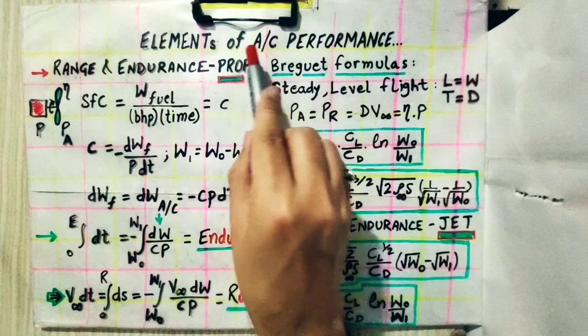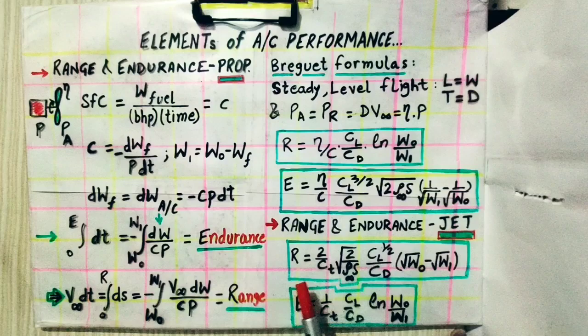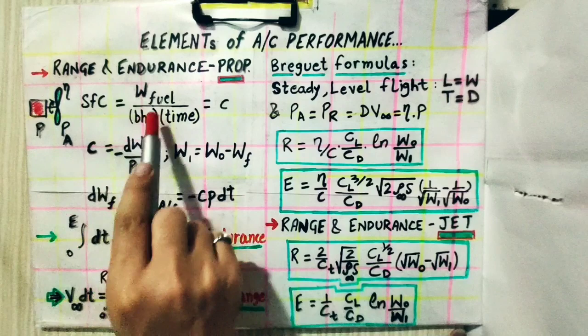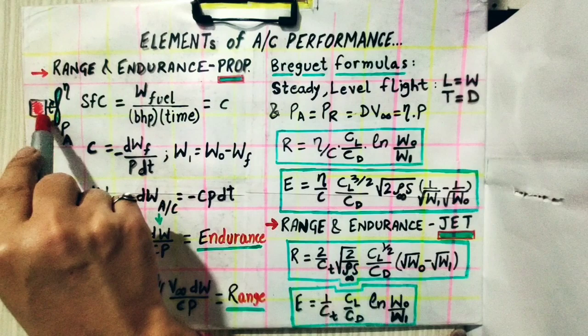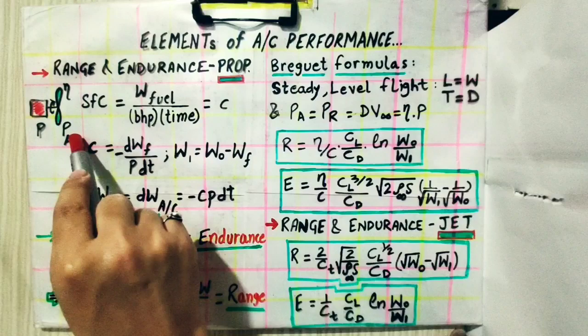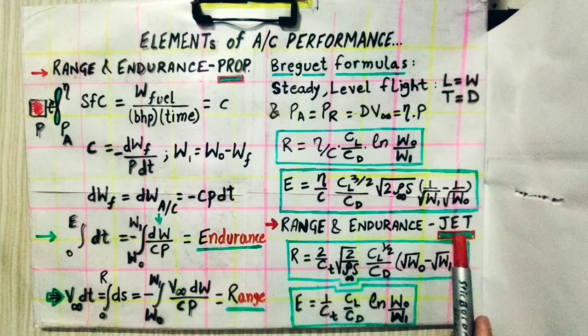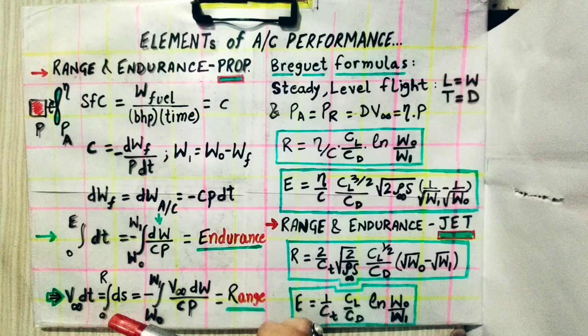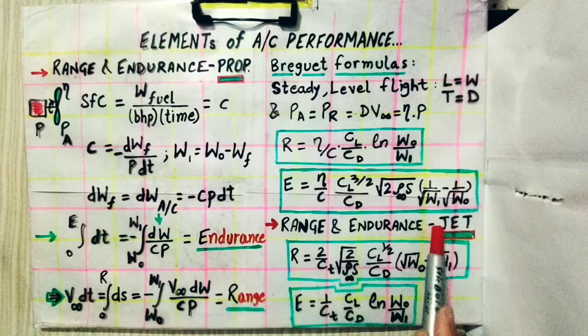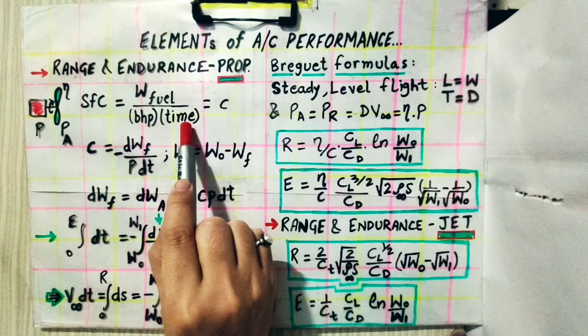Now moving on to range and endurance for a jet engine airplane. The specific fuel consumption differs here: in a piston engine, fuel is consumed to generate power to rotate the shaft and drive the propeller; in a jet engine, the fuel consumed depends on the thrust generated at the nozzle exit. Therefore, the specific fuel consumption for a jet engine is defined as the fuel weight consumed per unit thrust per unit time.